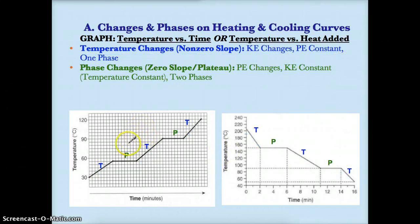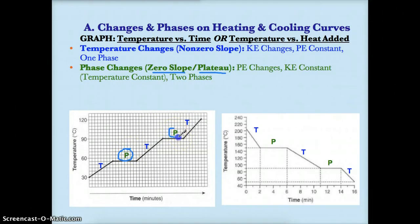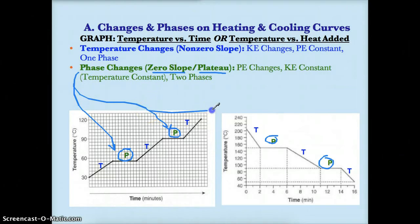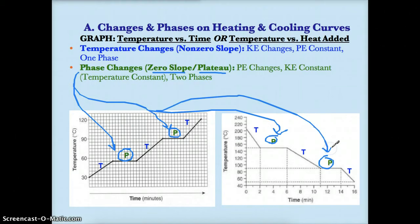The next thing to know is these phase changes. Phase changes occur when you have zero slope — a plateau or flat line. If you have a zero slope or plateau — a flat line like here and here, or here and here — these zero slopes or plateaus where you have flat lines are known as phase changes. These green P's where you have flat lines are phase changes. During these phase changes, since the temperature is not changing, the kinetic energy would obviously be constant since kinetic energy is related to temperature.